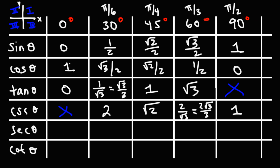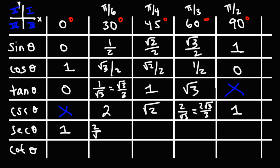For secant: secant 0 is the reciprocal of cosine 0, so it's just 1. Secant 30 is the reciprocal of root 3 over 2, giving 2 over root 3, or 2 root 3 over 3. Secant 45 is the same as cosecant 45 since those sine and cosine values are equal, so it's simply square root of 2. Secant 60 is the reciprocal of 1/2, which is 2. And secant 90 is 1 over 0, which is undefined.